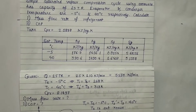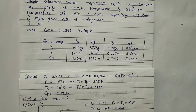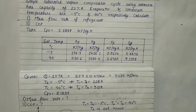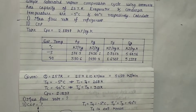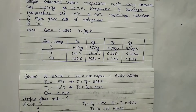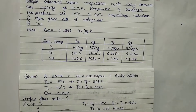Hello everyone. We will be solving a problem on simple saturated vapor compression cycle. The numerical is given as: a simple saturated vapor compression cycle using ammonia has a capacity of 25 TR. Evaporator and condenser temperatures are minus 5 and 40 degree Celsius respectively. Calculate first the mass flow rate of refrigerant, and second the COP. For this we need to take CPV, that is CP of vapor, equal to 2.1897 kJ per kg Kelvin. The following table gives the properties of ammonia at temperatures of minus 5 and 40 degree Celsius.